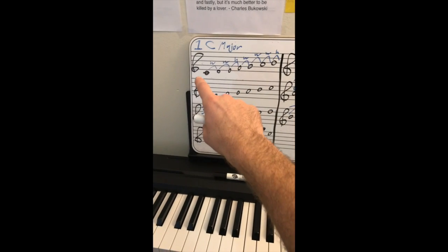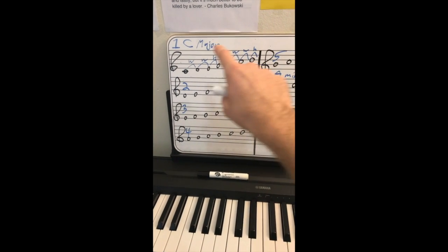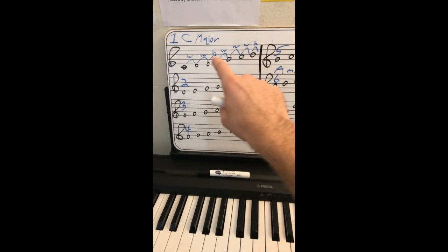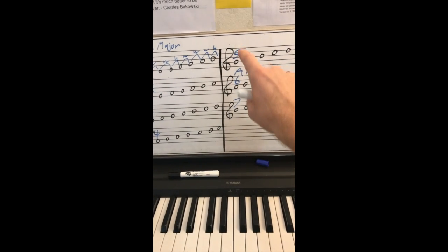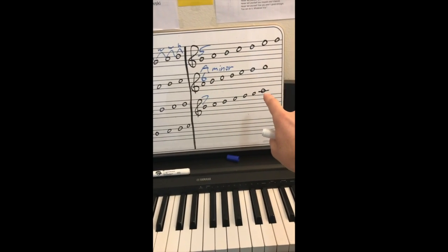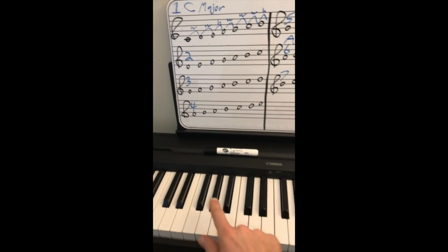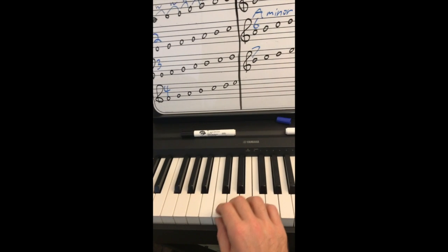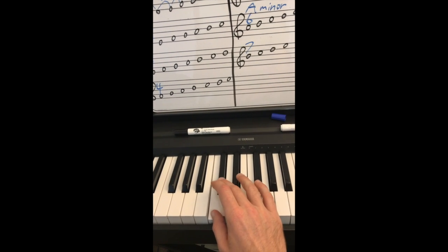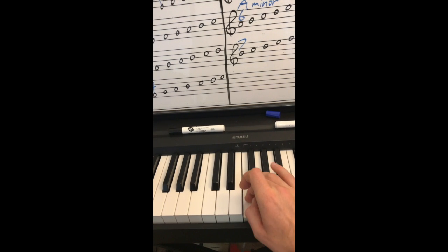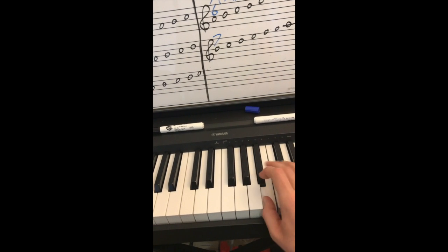So that means from any major scale, which has seven notes, any of those notes can become a new tonic to build a new scale. Now, seven modes, 12 keys, or I should say 12 notes in our chromatic scale: 2, 3, 4, 5, 6, 7, 8, 9, 10, 11, 12.